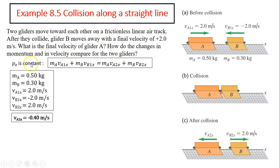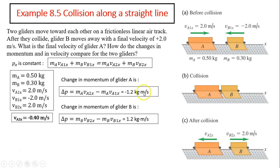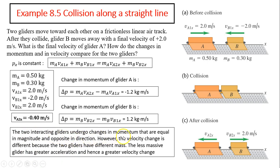How do the change in momentum and velocity compare for the two gliders? The change in momentum should be equal and opposite. The change in momentum in glider A is negative 1.2 kilogram·meters per second, so the change in momentum for glider B is positive 1.2 — this is because the impulses are equal and opposite. However, the velocity change of A is smaller than that of B because the mass of A is bigger than the mass of B. The less massive glider has greater acceleration and hence greater velocity change.